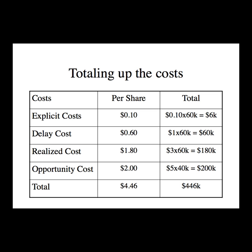You can divide that total by the 100,000 shares that were initially requested to get a per-share basis for the different costs. If you want to use a percentage, use the $50 price — the price the portfolio manager originally wanted — as your base. So you can either use $50 on a per-share basis or take $50 × 100,000 shares and compare that with the total transaction costs.